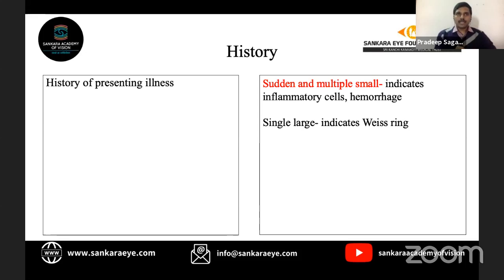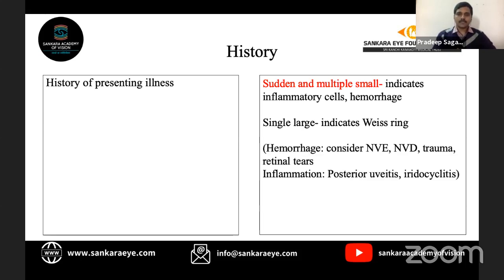Floaters can be sudden in onset or present for a longer duration. If sudden in onset, we need to know whether there are multiple small floaters or a single large floater. Multiple small floaters usually indicate inflammatory cells in the vitreous or vitreous hemorrhage. A single large floater is more likely due to a vitreous ring secondary to posterior vitreous detachment. When sudden and multiple small, we consider hemorrhage — due to neovascularization elsewhere, neovascularization at the disc, trauma, or a retinal tear.